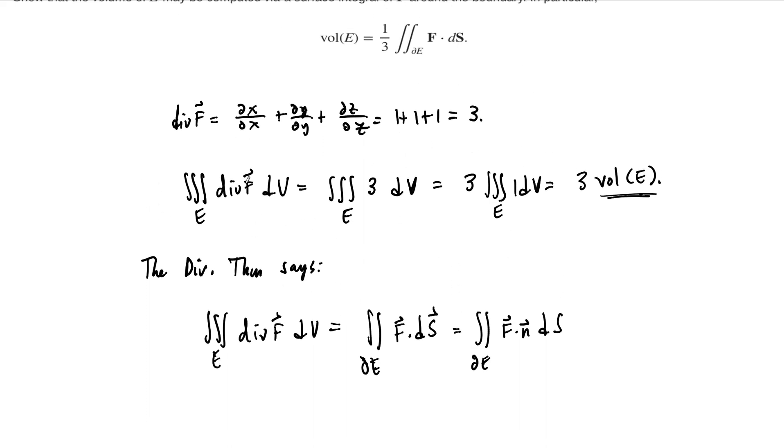So, but look what we have. On one hand, we know that the divergence of our vector field, if we integrate up the divergence, we get three times the volume of our region. On the other hand, the divergence theorem tells us that the integral of that divergence is equal to the flux. And let's use this one because that's the one we were given up here. And just by comparing these two, this one must be equal to this one.